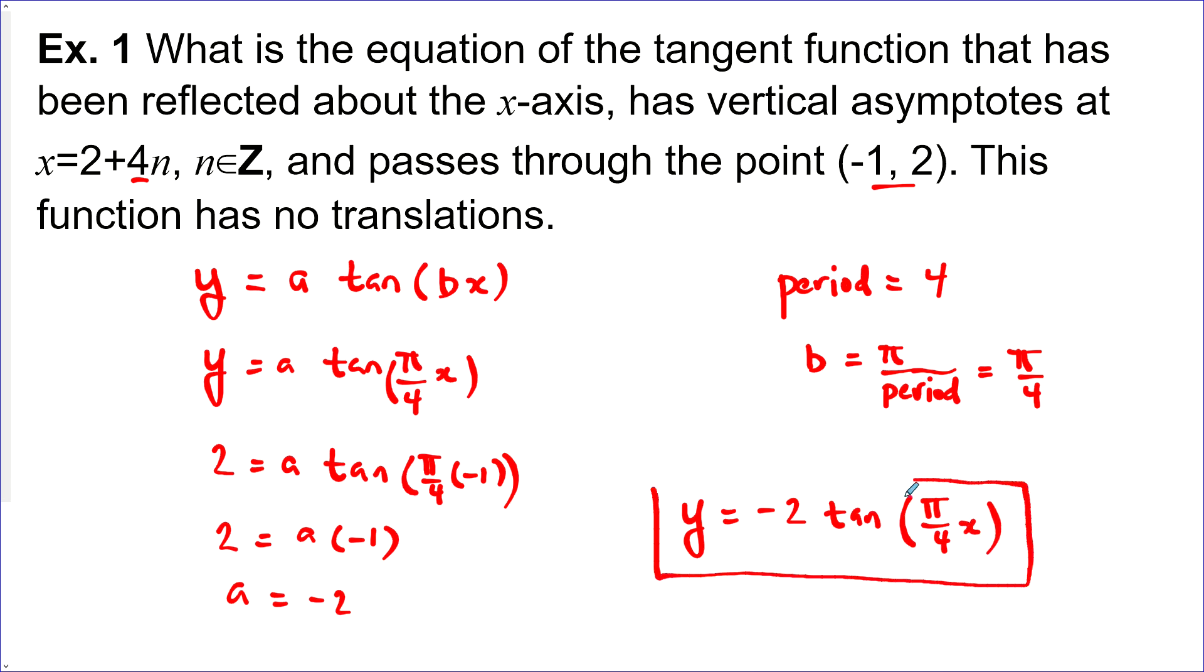Now, you could have realized that we had a vertical reflection and put a negative here. And then when you solved it, it would have got a equals 2. That works as well.